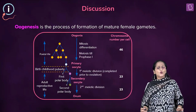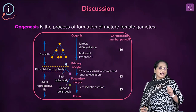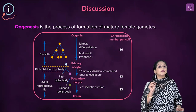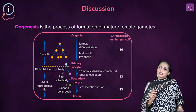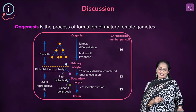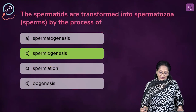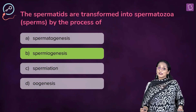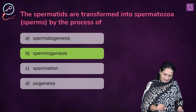Then we come across oogenesis. If spermatogenesis is the formation of the male gamete, oogenesis is the formation of the female gamete. Looking at the original question, spermatids are transformed into spermatozoa by the process of spermiogenesis. Yes, B is the right answer. You can eliminate A, C, and D.